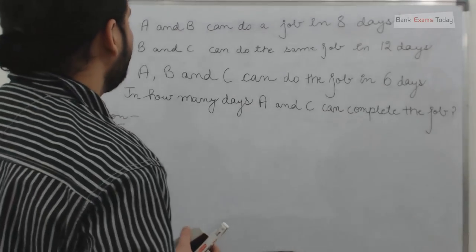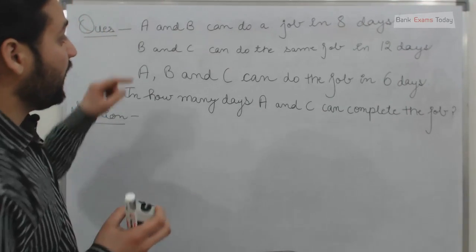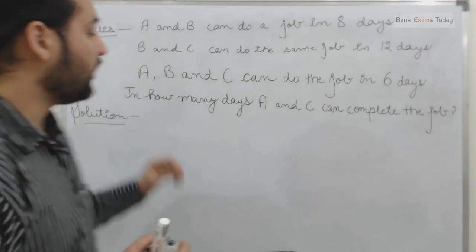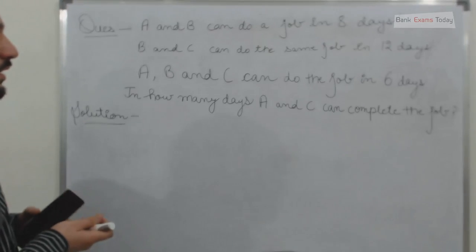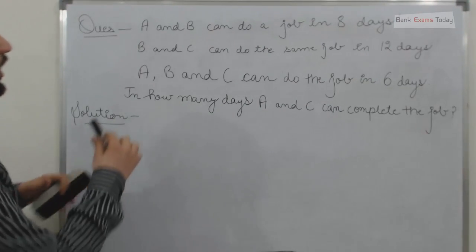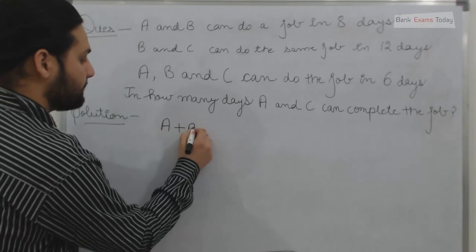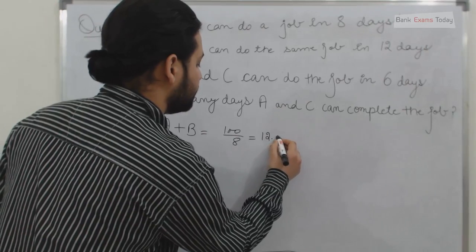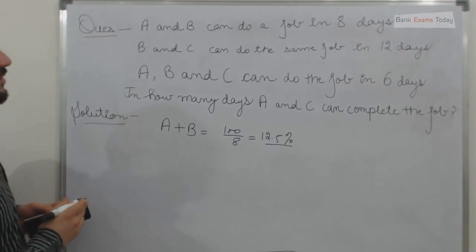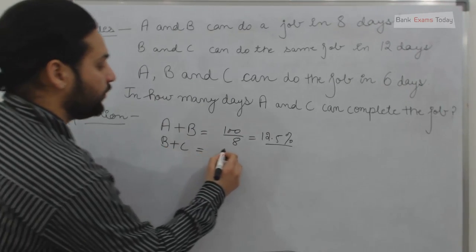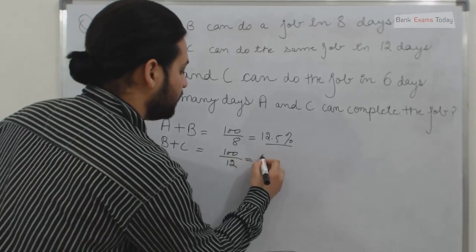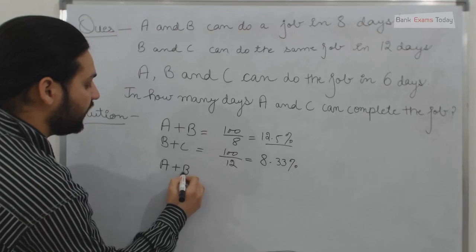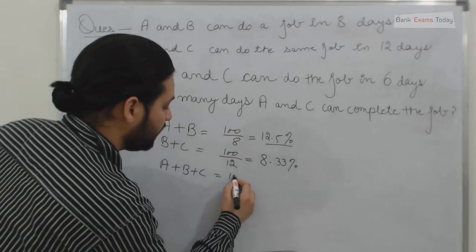Let's do another example. If A and B can do a job in 8 days, B and C can do the same job in 12 days, and A, B, and C working together can do the job in 6 days, in how many days can A and C complete the job? This is a question from SBI 2010. The efficiency of A and B is 100 divided by 8, which equals 12.5 percent. The efficiency of B and C is 100 divided by 12, which equals 8.33 percent. The combined efficiency of A, B, and C is 100 divided by 6, which equals 16.66 percent.